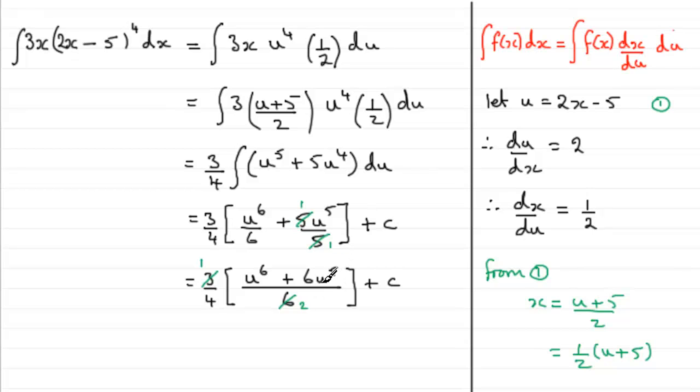We can also pull out u to the power 5 as a common factor. So putting those ideas together, we've got u to the power 5 over 4 times 2, which is 8. And that's being multiplied by u plus 6, and then plus c.